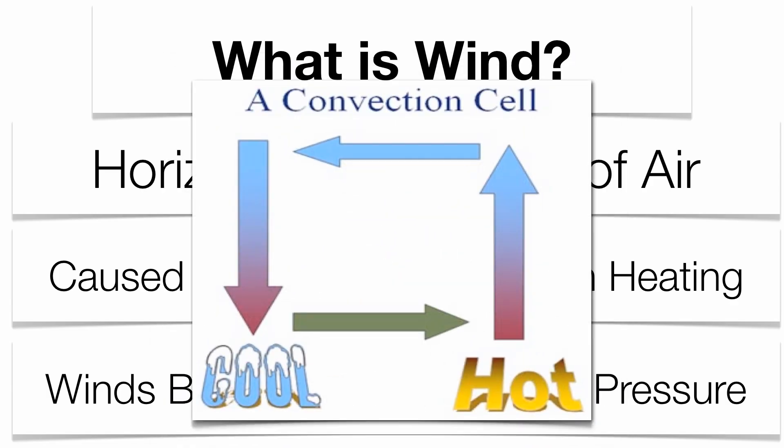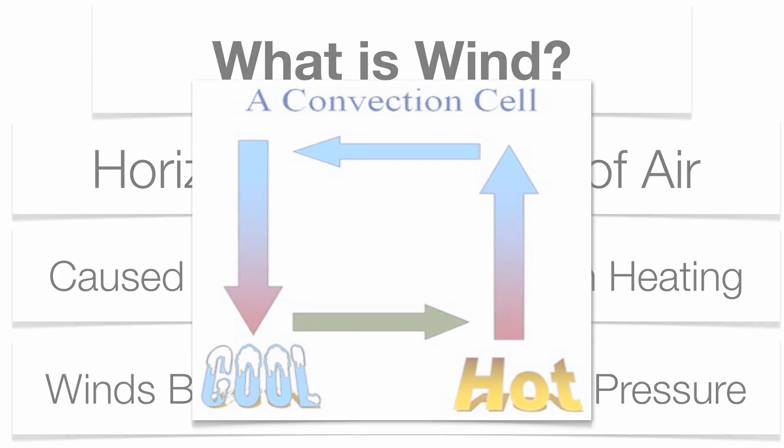Here's an example of what a convection cell is. Low density air rises — that's going to be hot. High density air sinks — that's going to be a little bit cooler.